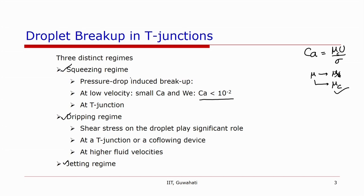The dripping regime is determined by the interplay of shear stress and interfacial tension — the balance of these two forces determines the size of the bubble. In the jetting regime, one gets a long jet of the continuous fluid, and the thickness of this thread is determined by the viscosity ratio of the two fluids.